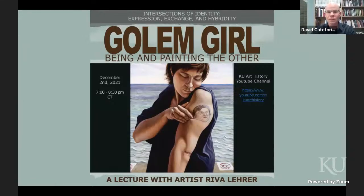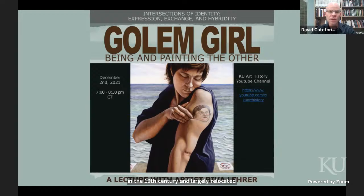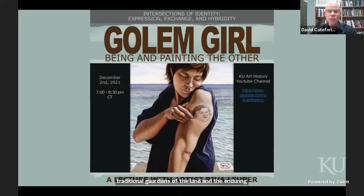Good evening. I'm David Catafores, Professor and Chair of Art History at the University of Kansas. I would like to acknowledge that the University of Kansas resides on the ancestral territory of the Kaa people, who were forced off their land by the United States in the 19th century and largely relocated to Oklahoma. This acknowledgment recognizes Native Americans as traditional guardians of the land and the enduring relationship between Native peoples and these traditional territories.